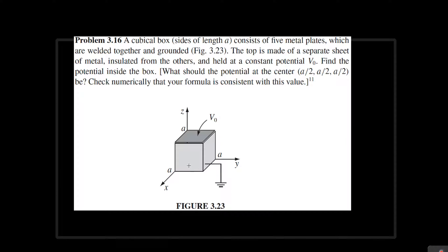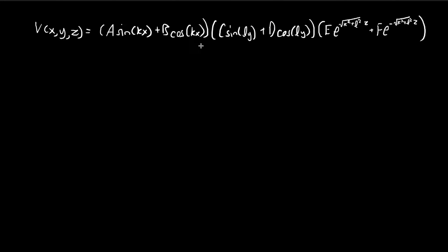The first boundary condition: consider when x equals zero, i.e., on the yz-plane. On that plane we know the potential has to be zero. Since sine of zero equals zero but cosine of zero equals one, in order for the whole expression to equal zero regardless of other values, we need B equal to zero. So we can get rid of the cosine term in x entirely.